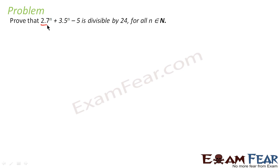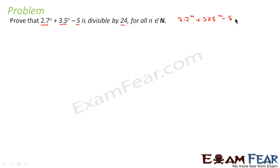In this problem we have to prove that 2 into 7 to the power n plus 3 into 5 to the power n minus 5 is divisible by 24. That means 2 into 7 to the power n plus 3 into 5 to the power n minus 5 is equal to 24 into some constant d.